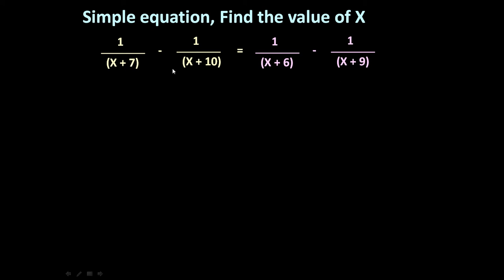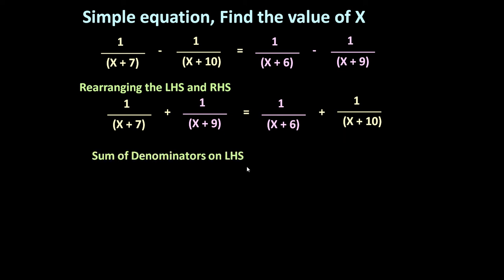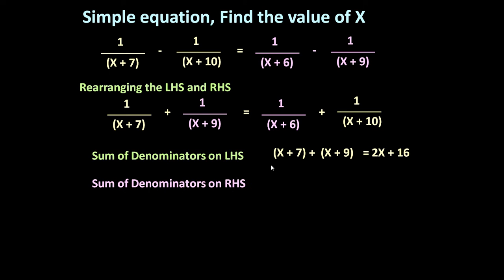This is the equation. If you see the sum of denominators here, x minus x will become 0 on both sides, so this equation doesn't directly hold true. But we can rearrange the left-hand side and right-hand side to fulfill our conditions. Taking the minus terms across: 1 upon x plus 7 plus 1 upon x plus 9 is equal to 1 upon x plus 6 plus 1 upon x plus 10. Now the sum of denominators on the left-hand side, x plus 7 and x plus 9, becomes 2x plus 16.